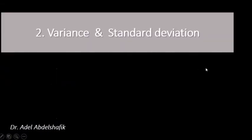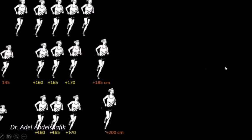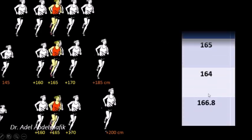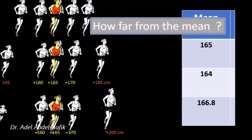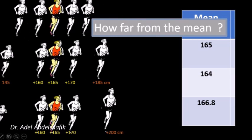Now, what about the variance and the standard deviation? Suppose we have three groups of five persons with their heights. Each group has almost the same mean, but in the first group the values are close to the mean, while in the last group they are widely distributed away from the mean. The question is: how do we quantify how far the members of a group are from their mean?